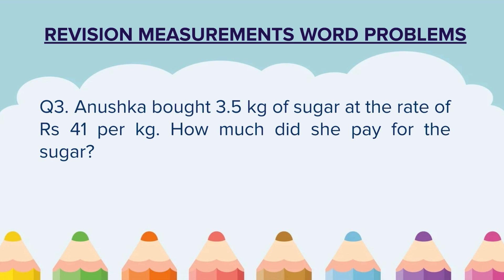Question 3. Anushka bought 3.5 kg of sugar at the rate of Rs. 41 per kg. How much did she pay for the sugar? In this question, Anushka bought 3.5 kg of sugar at the rate of Rs. 41 per kg. This means the cost of 1 kg of sugar is Rs. 41, and we have to find the cost of 3.5 kg.